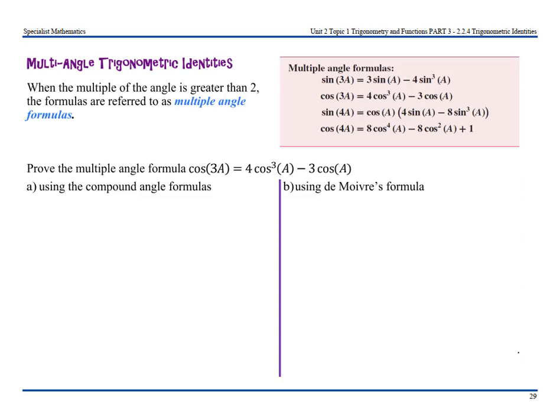This video goes through multi-angle trigonometric identities. When the multiple of the angle is greater than 2, the formulas are referred to as multiple angle formulas. The QCAA subject matter says to use the binomial theorem to prove and apply multi-angle trigonometric identities up to sine 4x and cos 4x.